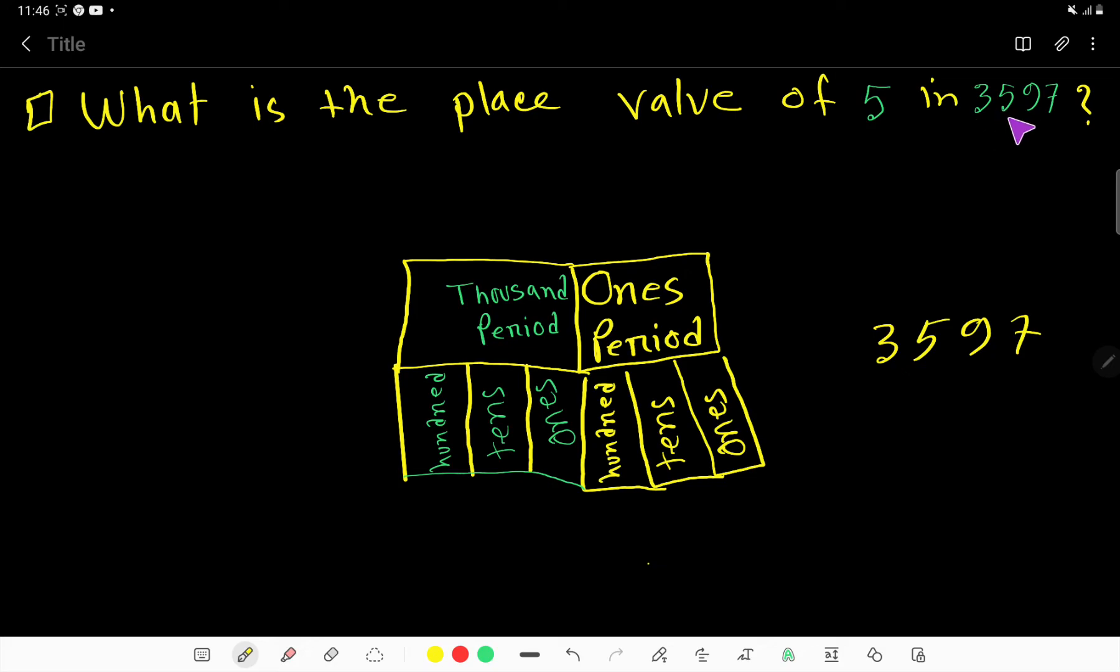This number has four digits. So when you are going to write your number, you have to think about the periods. In every period you will get three digits.